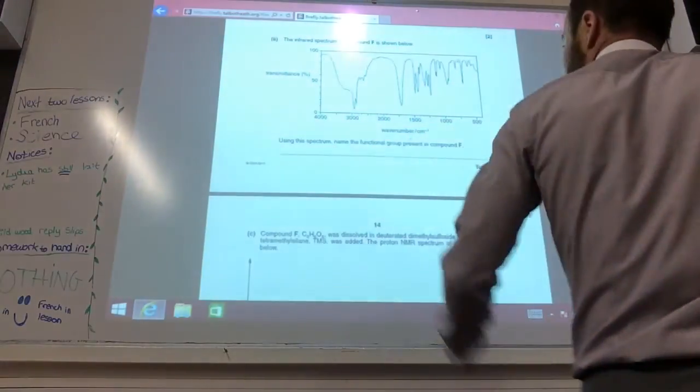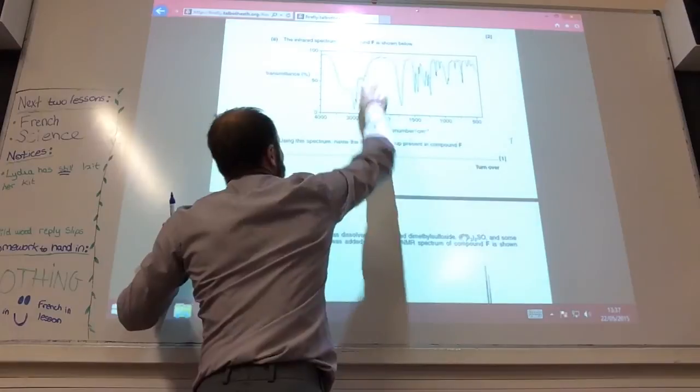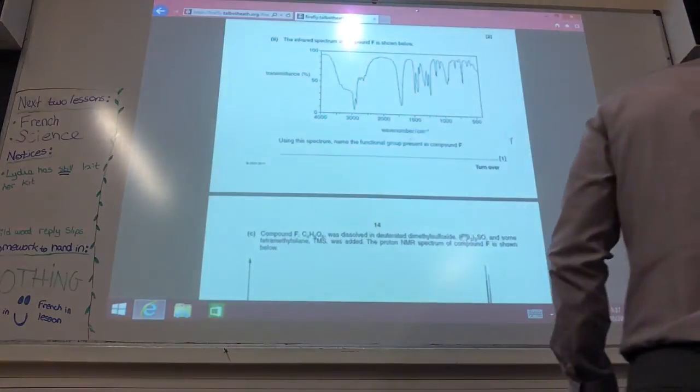For the next one then, usually a spectrum of functional group presence. I've got a lovely broad OH there and I've got a C-double-bond-O down there. So it's going to be a carboxylic acid.